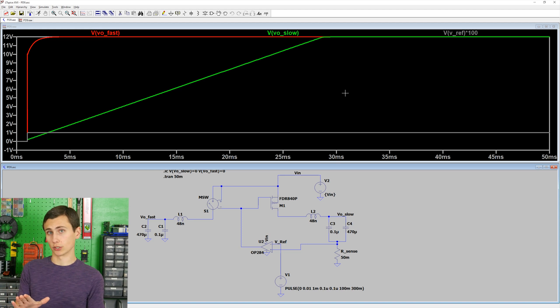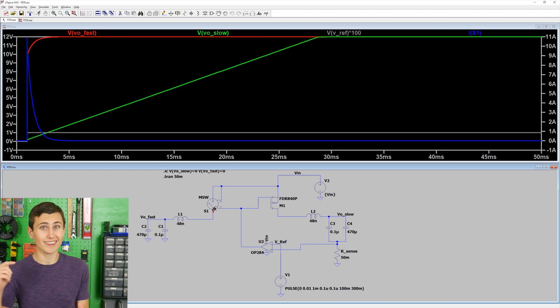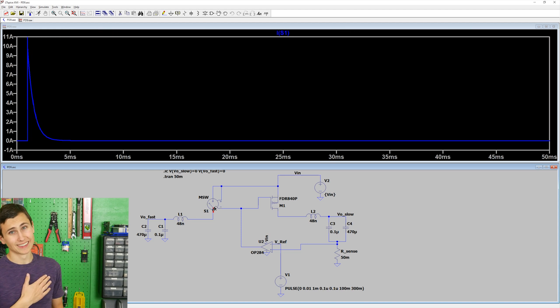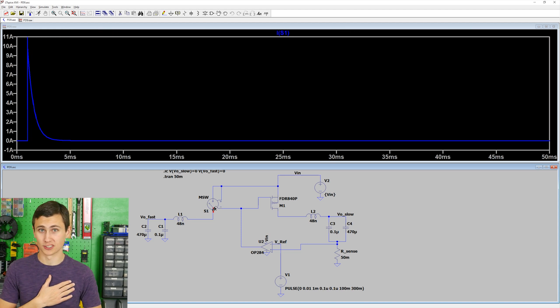Let's add another dimension to this picture. Let's compare how the current through our two switches look. Let's start with the fast switch, and oof. That's a peak current of over 10 amps when that switch turns on.